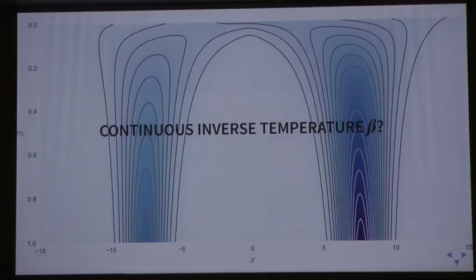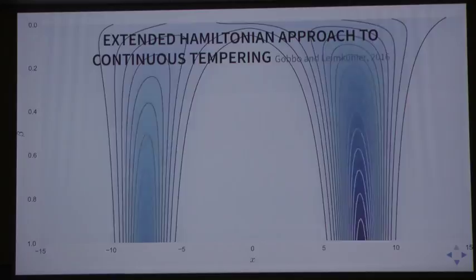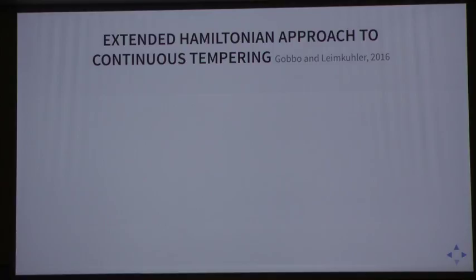A particularly interesting instantiation of this, which was recently introduced in the statistical physics literature, was this extended Hamiltonian approach to continuous tempering by Goebbels and Langkooler. Here, they basically introduced this temperature control variable, which indirectly defines what the inverse temperature is going to be. We have this smooth piecewise defined function which relates our U variable to this inverse temperature. Then we define some extended Hamiltonian via this U variable. We have this typical beta times our phi potential, we introduce a Gaussian prior on our U's, we have a momentum associated with our original state, and then another conjugate momentum associated with our U variable.